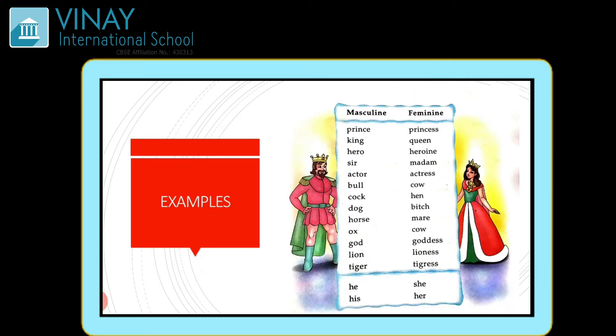More examples of masculine and feminine. Prince — what is prince? Toh uski kya hoti hai — princess. Agar aapne suna hoga Cinderella, so Cinderella is a princess. Toh prince is masculine and princess is feminine. King — what will it be? Queen. Hero — heroine. Sir — madam. Actor — actress.